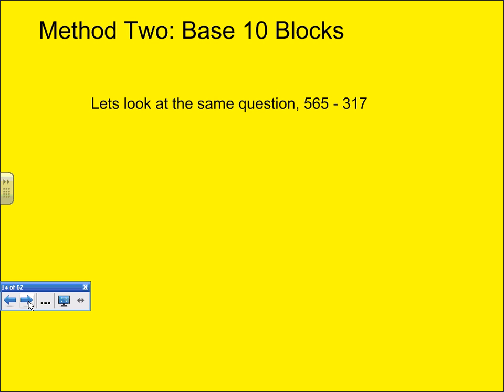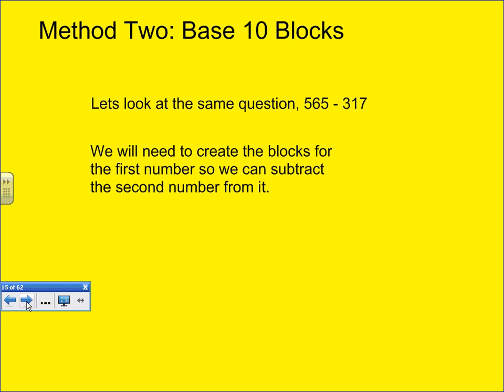Let's look at the same question, 565 minus 317, using the base 10 blocks. We will first need to create the blocks for the first number so we can subtract the second number from it.